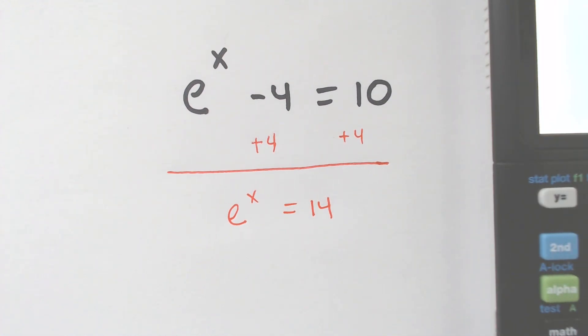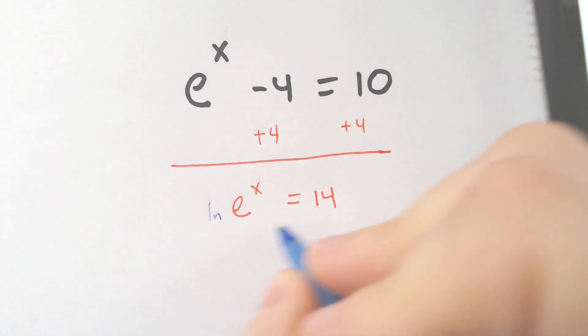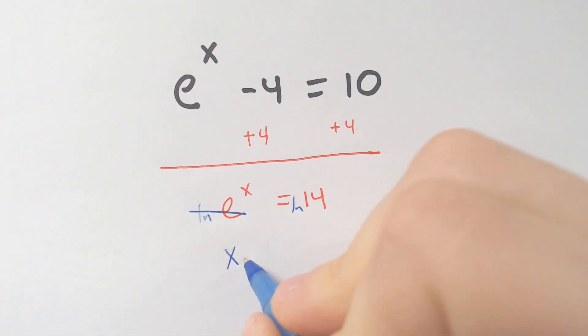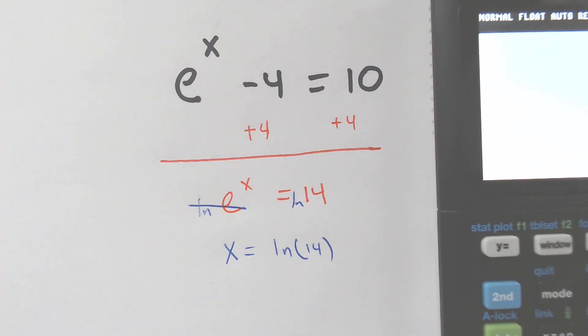So we are going to LN both sides of this equation and the LN of E would cancel out. The LN of E cancels out and you get X is equal to whatever the LN of 14 is. So you would just use your calculator to type in the LN of 14.